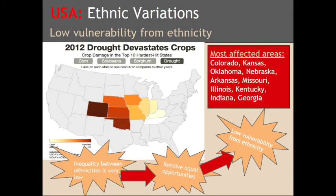The worst affected areas of drought are found in the middle states of the USA. Unlike Ethiopia, ethnic discrimination is very scarce, so most people receive the same opportunities such as access to education and politics. Furthermore, people receive help based on their need, not on their ethnicity, giving them an advantage over people in Ethiopia who are not given equal opportunities.